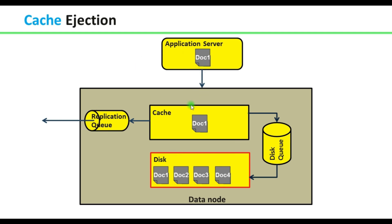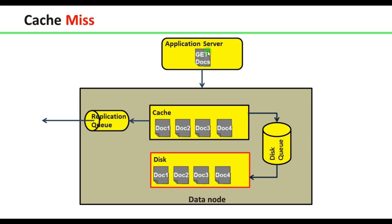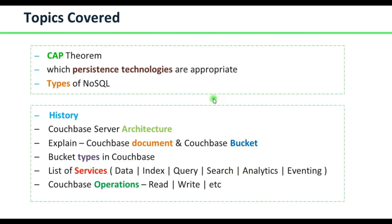Cache ejection: if the cache is filled with documents, then depending on the ejection policy — whether full eviction or key-value eviction (ejection policies will be discussed later) — documents will be ejected to disk. Cache miss: if a select query is filed from the application and the data is not available in the cache, it is a cache miss. The data is then fetched from disk, placed into the cache, and served to the user. These are the topics covered in this lecture.